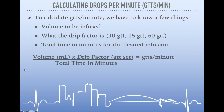Once we have that, we'll set our formula up. We'll have our volume in milliliters multiplied by our drip factor, which is just our drop set, and then we'll divide that by our total time in minutes. When we calculate that, we'll get our drops per minute.